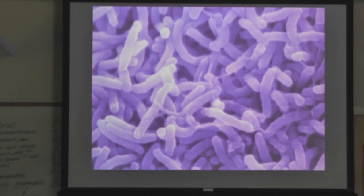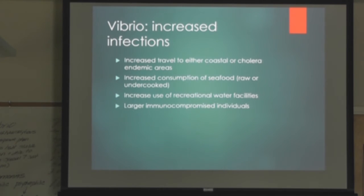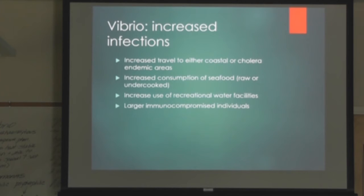Cholera pandemics have been documented since 1817 in Bangladesh. Why are there increased Vibrio infections? The reasons include travel to coastal or cholera-endemic areas; increased consumption of raw or undercooked seafood, particularly oysters; increased use of recreational water facilities; and larger populations of immunocompromised individuals who are at greater risk for infection.